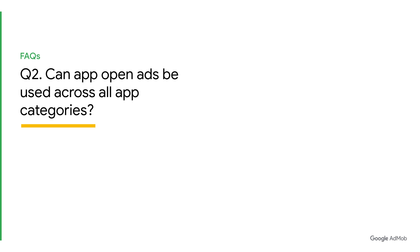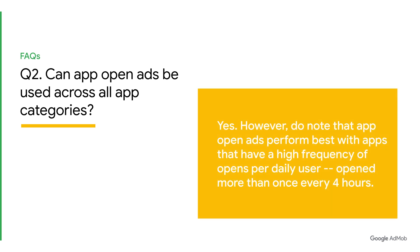Question 2: Can AppOpenAds be used across all app categories? Yes. In fact, AppOpenAds perform best with apps that have a high frequency of opens per daily user. Results are the most optimal for apps that are opened more than once every 4 hours. As a result, if your app does not receive frequent daily opens, you might see limited impact from this format and may want to consider using other AdMob ad formats.